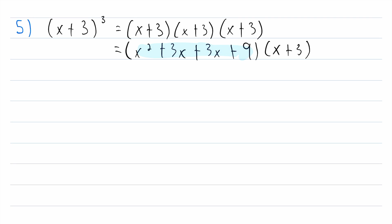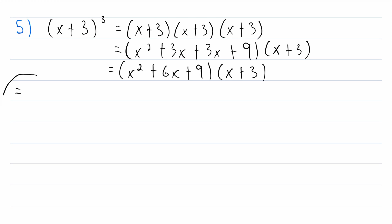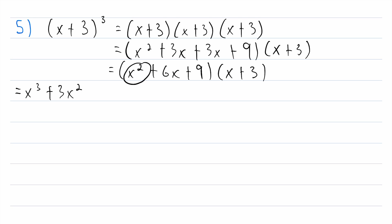Before moving to the third factor, we finish simplifying by adding like terms: x squared plus 6x plus nine, multiplied by x plus three. Now using the distributive property again: x squared times x is x cubed, x squared times three is plus 3x squared. Then 6x times x is plus 6x squared, and 6x times three is plus 18x. Finally, nine times x is plus 9x, and nine times three is plus 27.